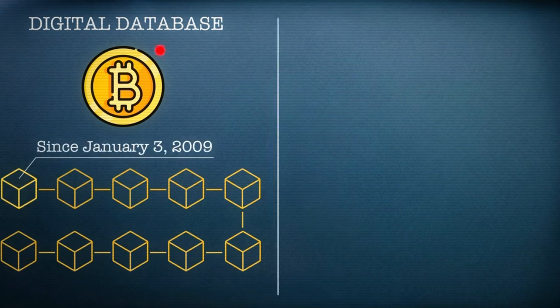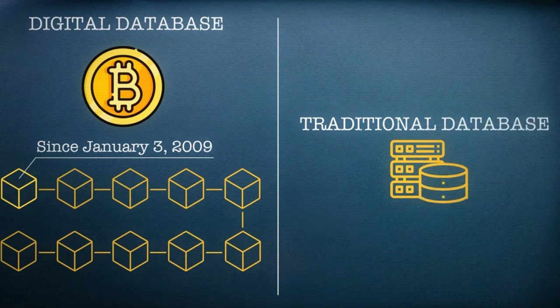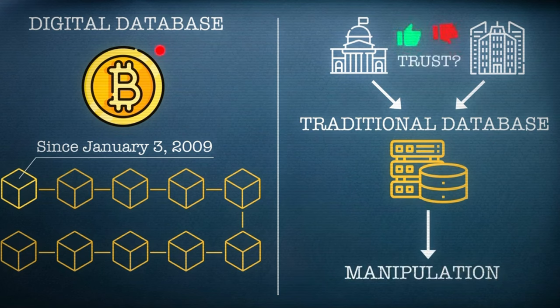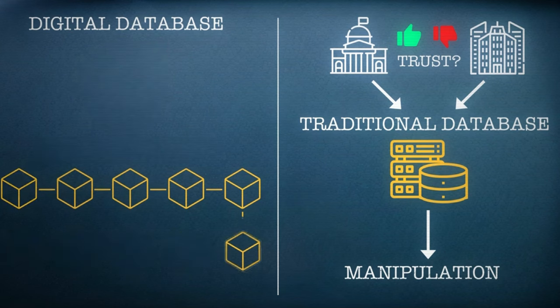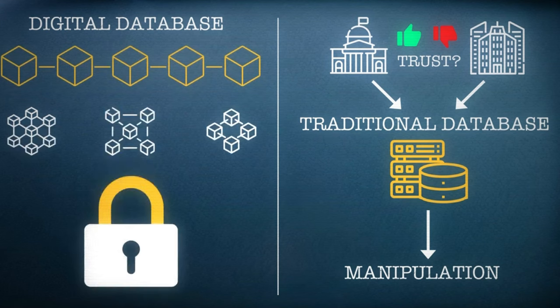But there are a few things that make blockchain special. Traditional databases can often be edited because they are typically maintained by centralized authorities, such as governments or corporations. This can lead to manipulation, and means that trust in the database is completely reliant on the trustworthiness of the governing authority. But blockchains are different. They are immutable, and that means the information they store cannot be changed.